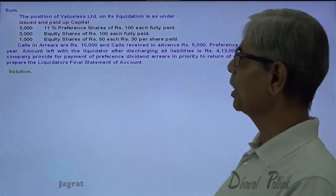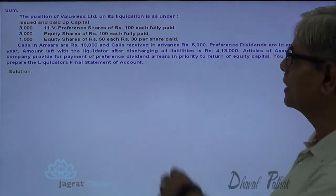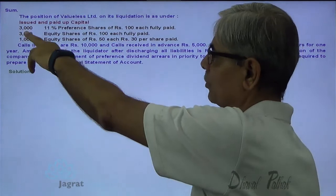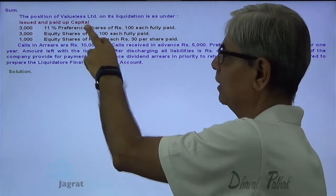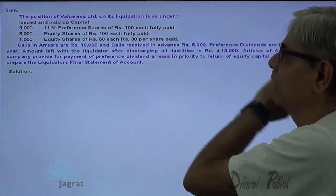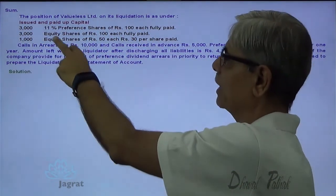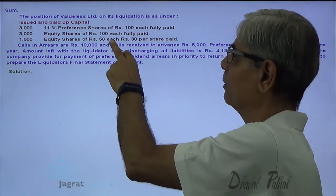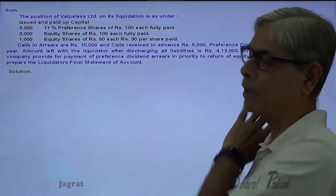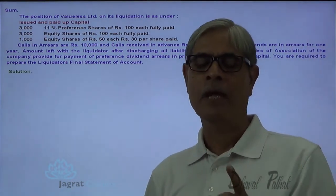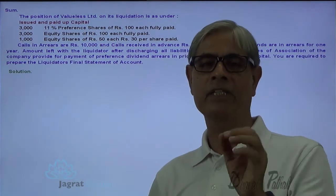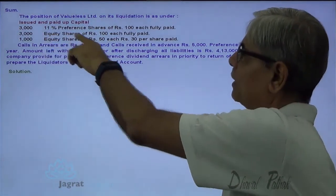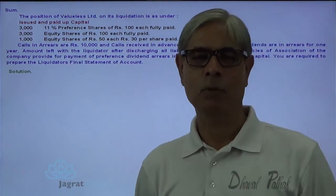The position of Valueless Limited on its liquidation is as under. Issued and paid-up capital: 3 lakh, 11 percent preference shares of rupees 100 fully paid up. 3,000 equity shares of rupees 100 fully paid up. 1,000 equity shares of rupees 50, 30 percent paid up — so it is partly paid up. Against 50, only 30 is paid up, so 60 percent amount is paid up, while in case of 3,000 equity shares, 100 percent amount is paid up.